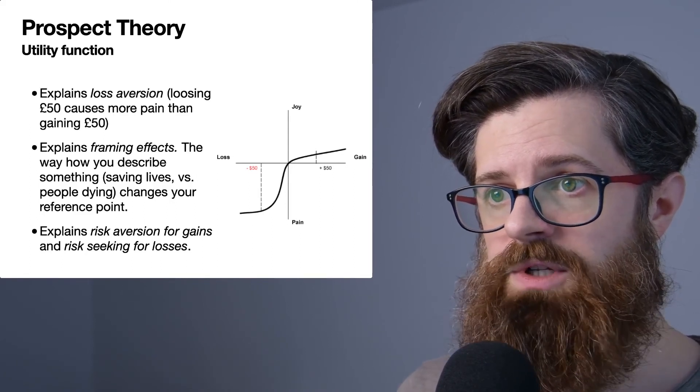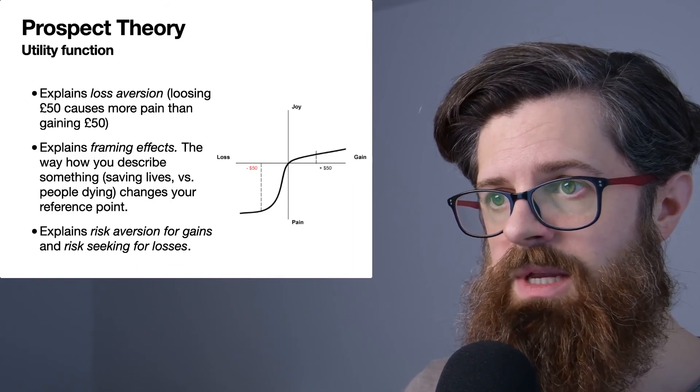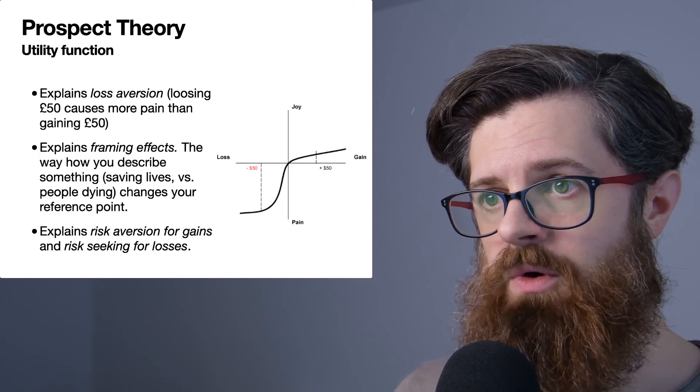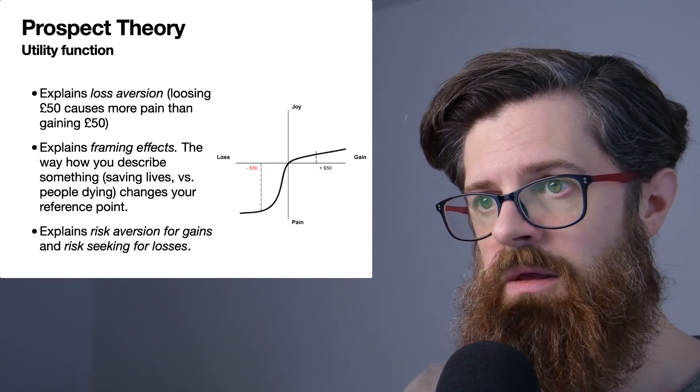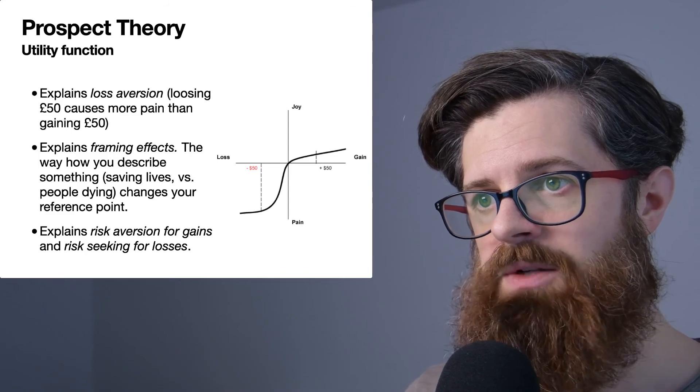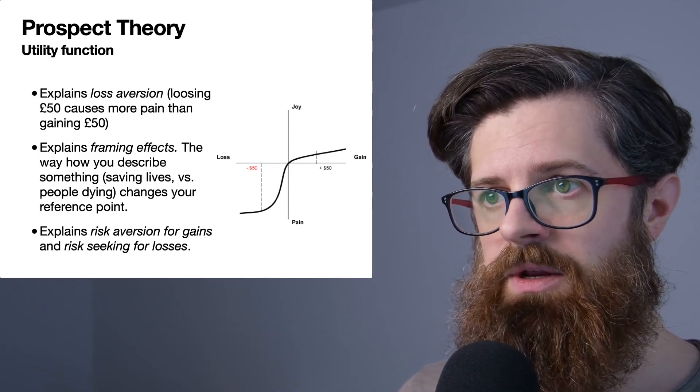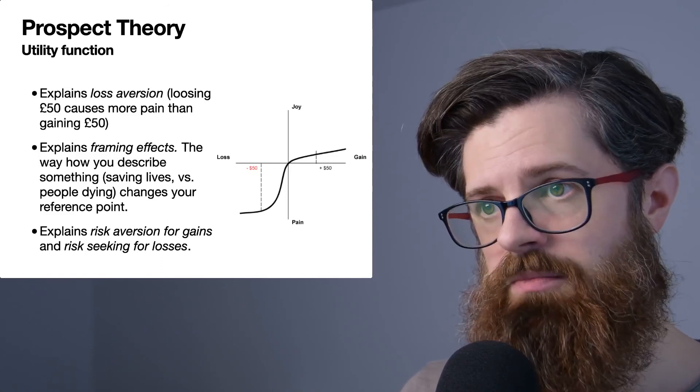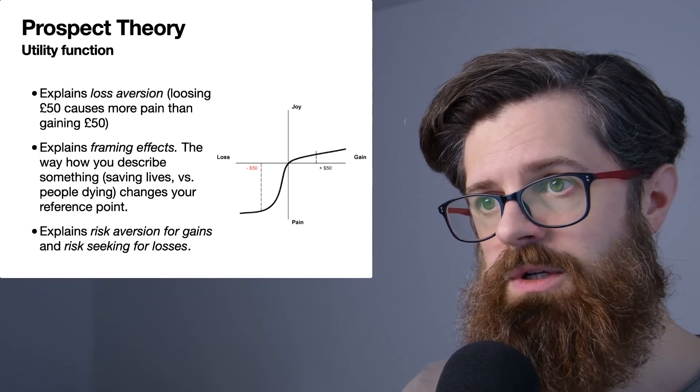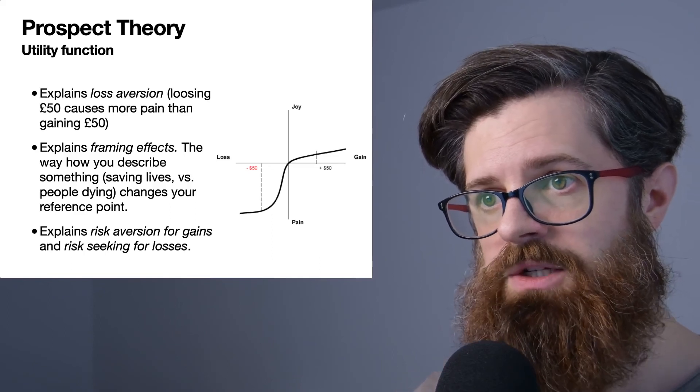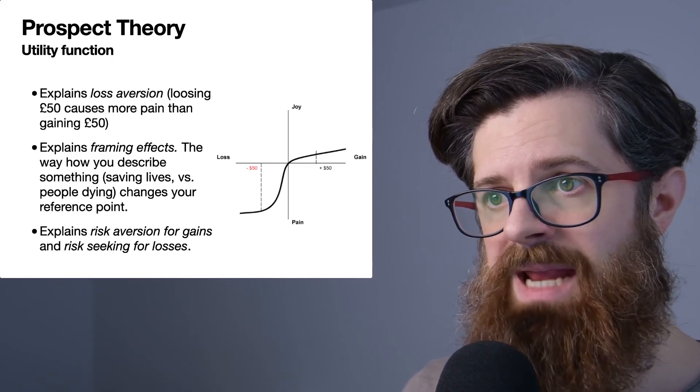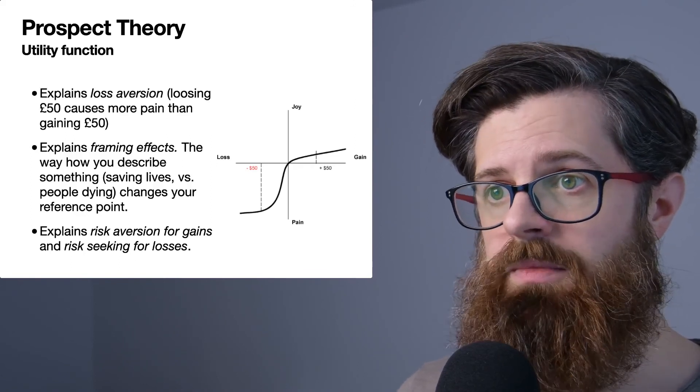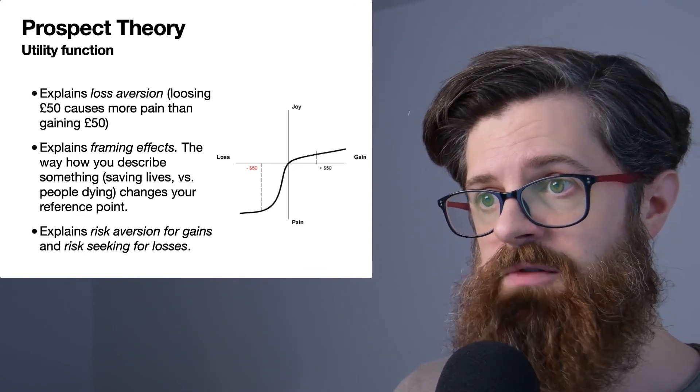You can think about different examples in life which might shift your reference frame. I have a video on the Asian disease problem, and what we saw in that video was changing the wording about saving lives versus the number of lives being lost. Automatically, according to prospect theory, this would shift your reference frame to start thinking about things either in terms of gains or losses, as opposed to the absolute outcome—the number of people saved overall, for example.